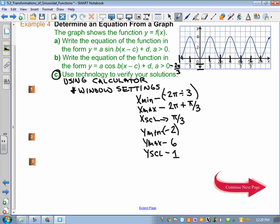Now, all of that is great to verify using your calculator, but we have to get our solution first. The easiest way is to take a look at the graph and determine three things. The maximum, the minimum, and the period. The maximum on this graph is positive 4. The minimum on this graph is 0.